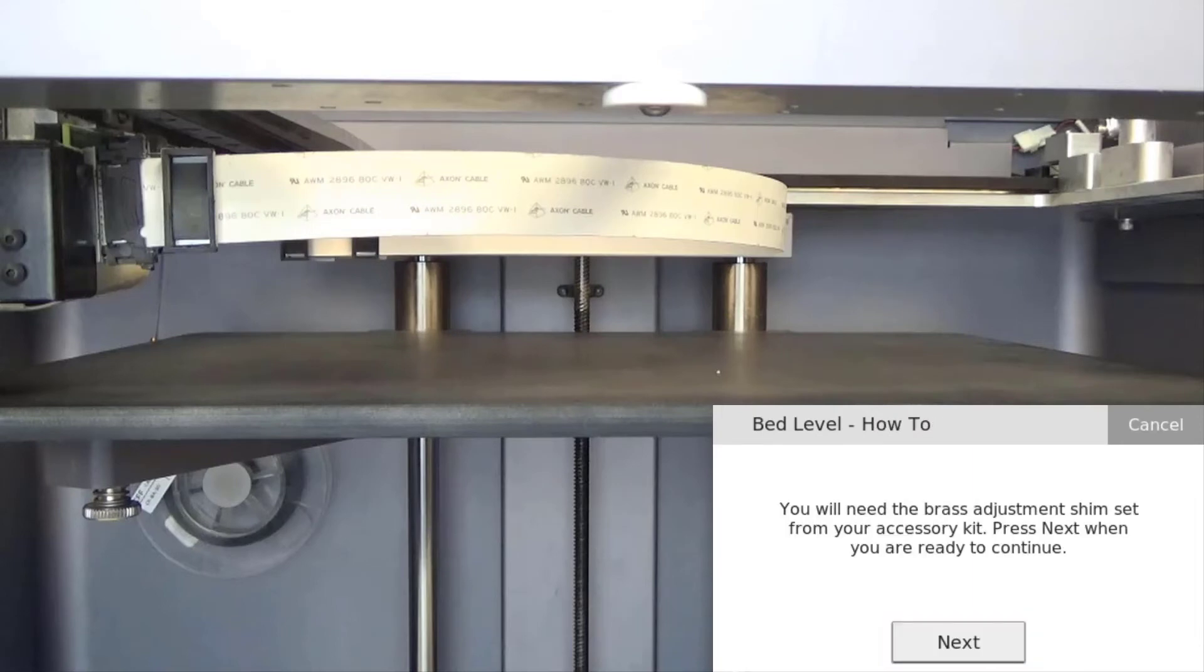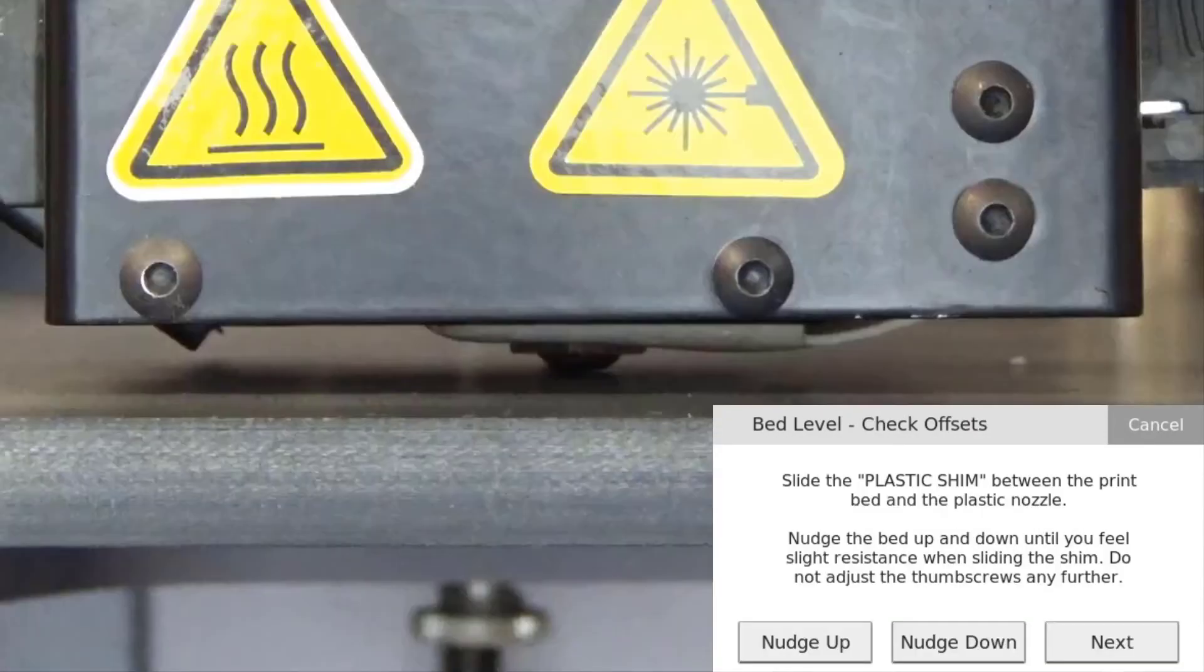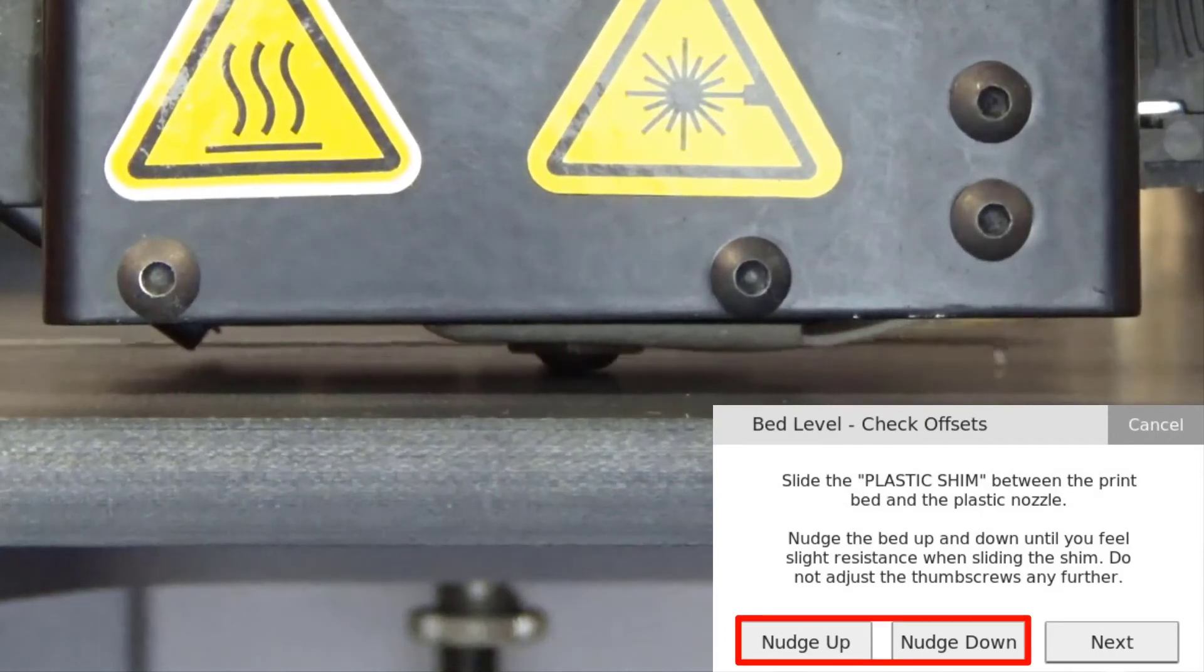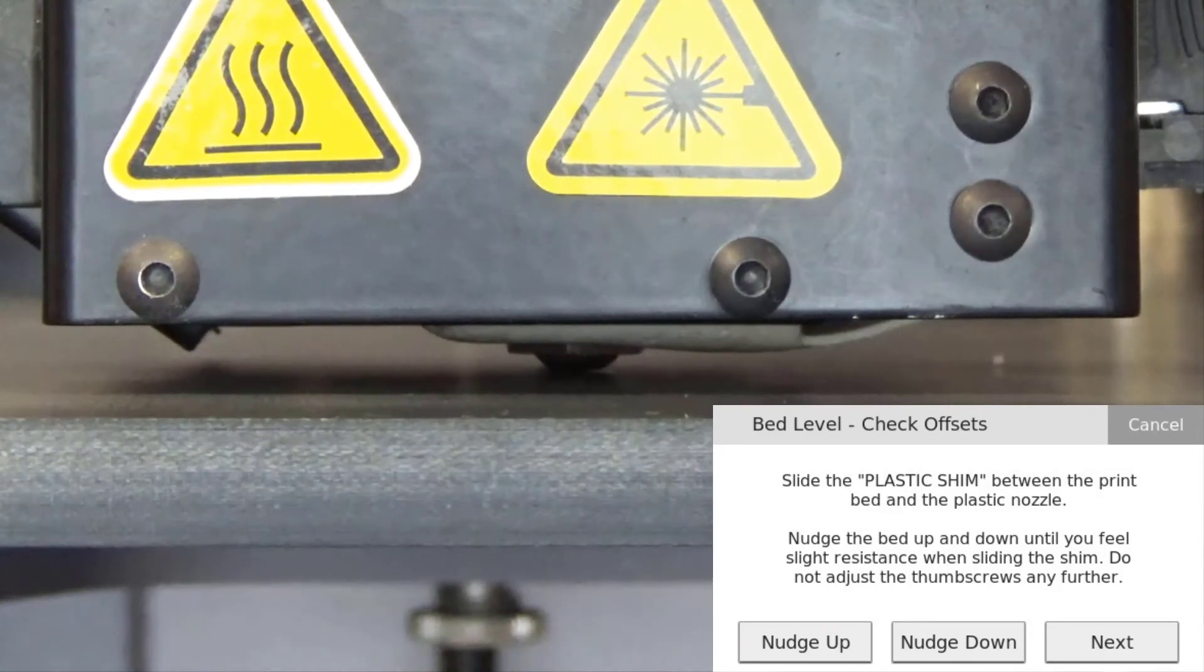Ensure that you have your two brass leveling shims from your accessory kit and press next. Slide the plastic shim under the plastic nozzle and use the nudge up and nudge down buttons to adjust the print bed in small increments such that there is slight tension on the fiber shim.